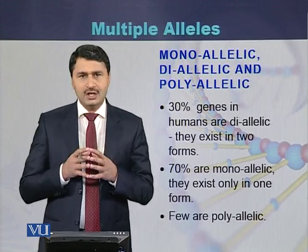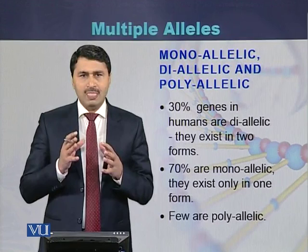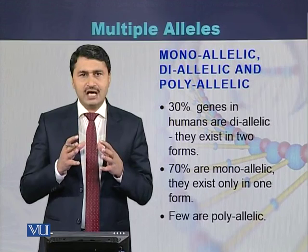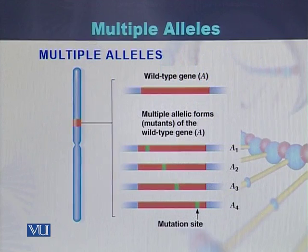In case of humans, there are approximately 30% of genes which are diallelic, meaning those genes contain two alleles — allele one and allele two. But there are approximately 70% of genes which are monoallelic, meaning those genes contain only one allele. And a few are polyallelic in nature.